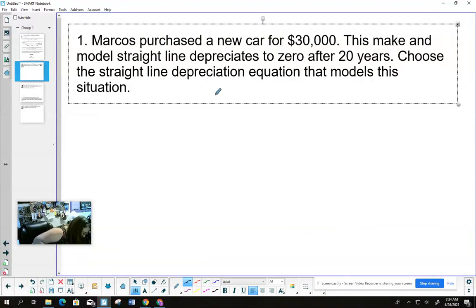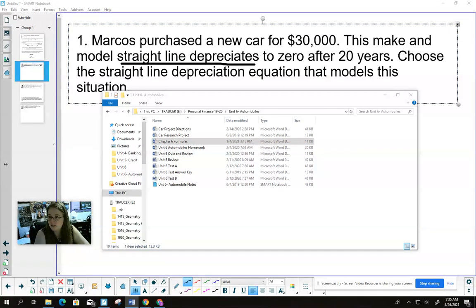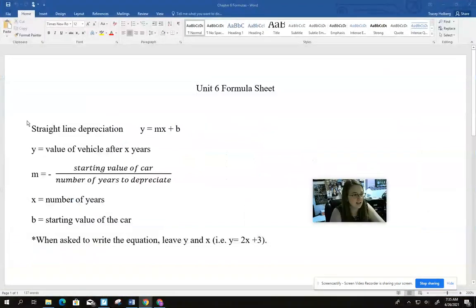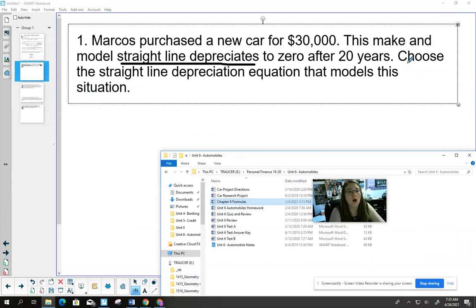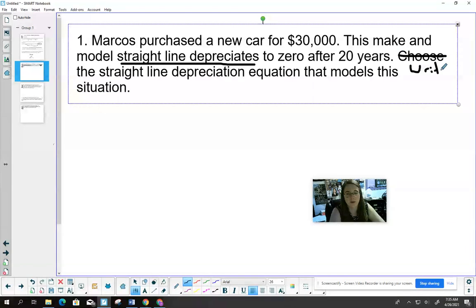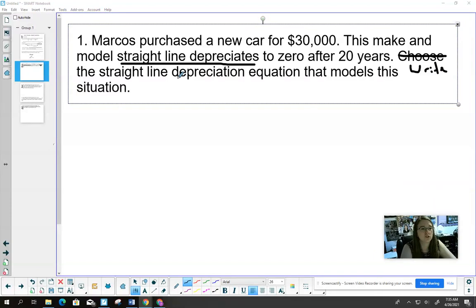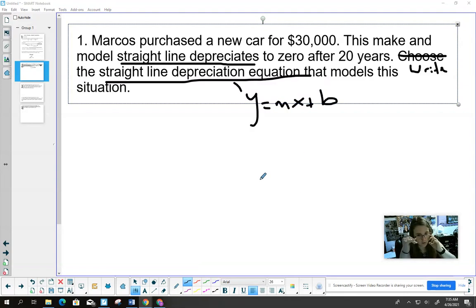Looking at number one - Marcos purchased a new car for $30,000. This make and model straight line depreciates to zero after 20 years. Choose the straight line depreciation equation that models this situation. You need to remember this is on your formula sheet - straight line depreciation is this huge chunk right here. So if they say write the equation, this is Y = MX + B.